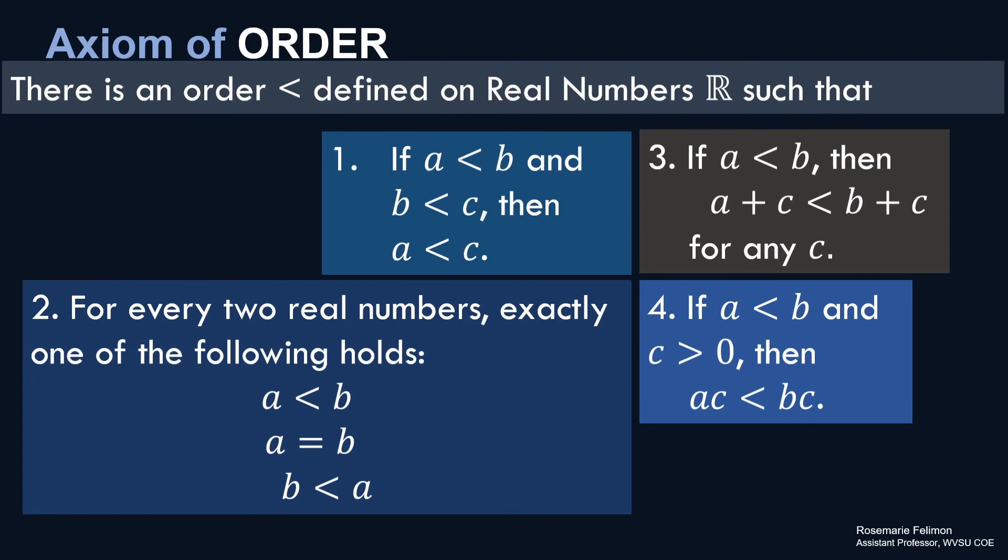We use the axiom of order as a guide in order for us to determine if a set is ordered. The axiom states there is an order, represented by the symbol less than, defined on real numbers such that we have the following properties. Number one, if a is less than b and b is less than c, then a is less than c. So we are familiar with this structure. It looks like a transitive property.